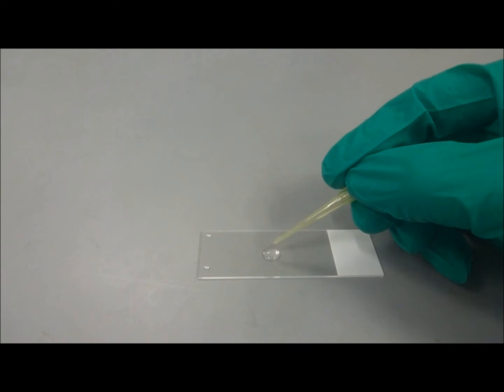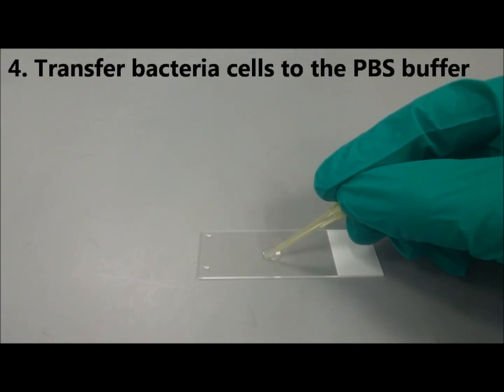Touch the drop of PBS with the pipette tip. Move the tip in a circular motion to transfer the bacterial cells to the PBS buffer.